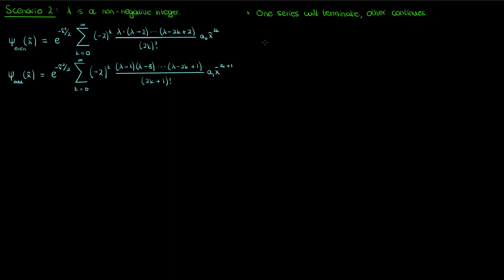This means that after eliminating the non-terminating series, the solution wave function to the harmonic oscillator time-independent Schrödinger equation is given by some constant capital K times our exponential times our Hermite polynomial H corresponding to the degree given by n, which I've now used to replace λ.